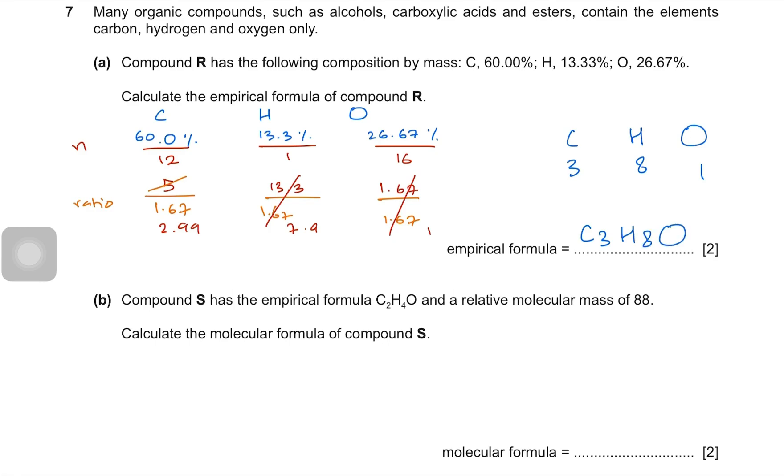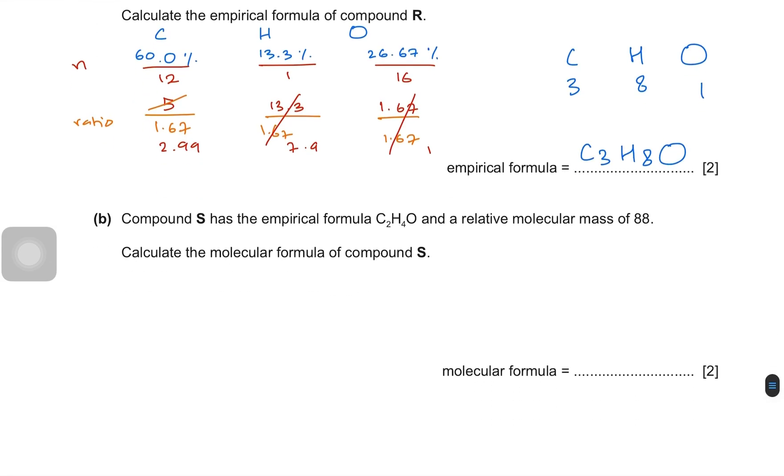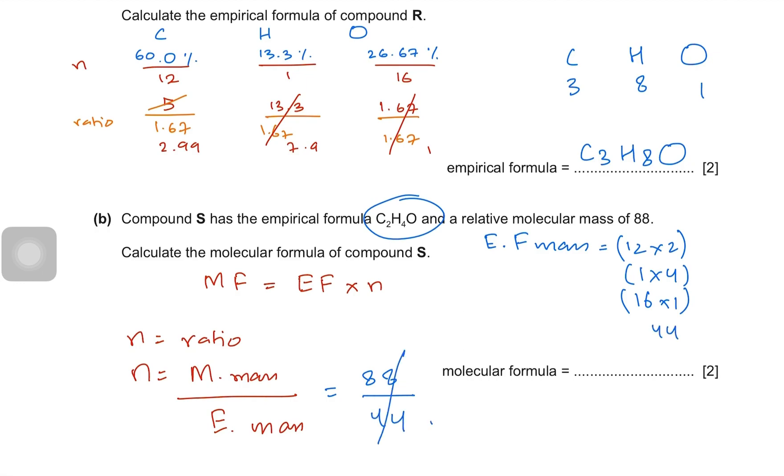Compound S has the empirical formula C2H4O and a relative molecular mass of 88. Calculate the molecular formula. So we know that molecular formula equals empirical formula times N. N equals the ratio of the masses. So N equals molecular mass divided by the empirical formula mass. When we do that, we get 88 divided by the mass of C2H4O. So empirical formula mass equals 12 times 2 plus 1 times 4 plus 16 times 1. So that's going to be 24 plus 4 plus 16. That's 44. So the value of N turns out to be 2.